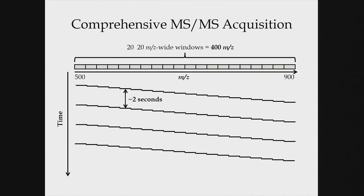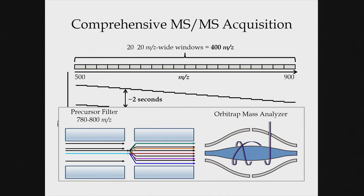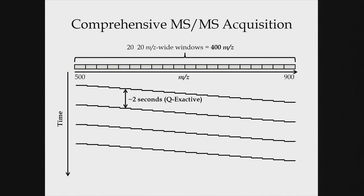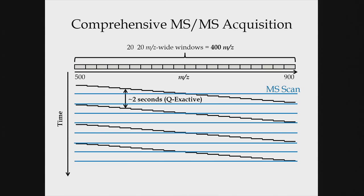On a Q Exactive, what's actually happening is we have a mass selection stage. We're showing selection from 780 to 800 — a 20 m/z wide window. With such a wide window, we're always isolating multiple precursors, indicated by the different colored lines. We fragment these multiple precursors together and measure them on an Orbitrap mass analyzer as full scan spectra. I also advocate for including an MS1 scan in your cycle, because having accurate precursor mass helps verify peptide detections.